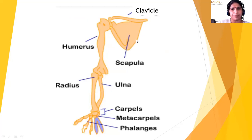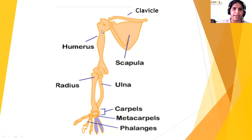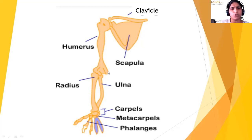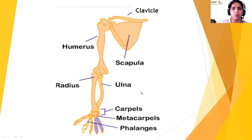The clavicle and scapula form the pectoral girdle, also known as the shoulder girdle. The humerus has a trochlea for combining with the radius and ulna. The ulna is larger than the radius; together they combine with the humerus and form the bones of the forelimbs. The carpus, metacarpus, and phalanges are also part of the appendicular skeleton but are not in the syllabus.